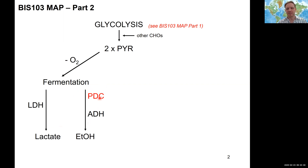Keep in mind, highlighted here in red, the PDC — pyruvate decarboxylase — does not exist in humans. We cannot do ethanolic fermentation; we do lactate fermentation.